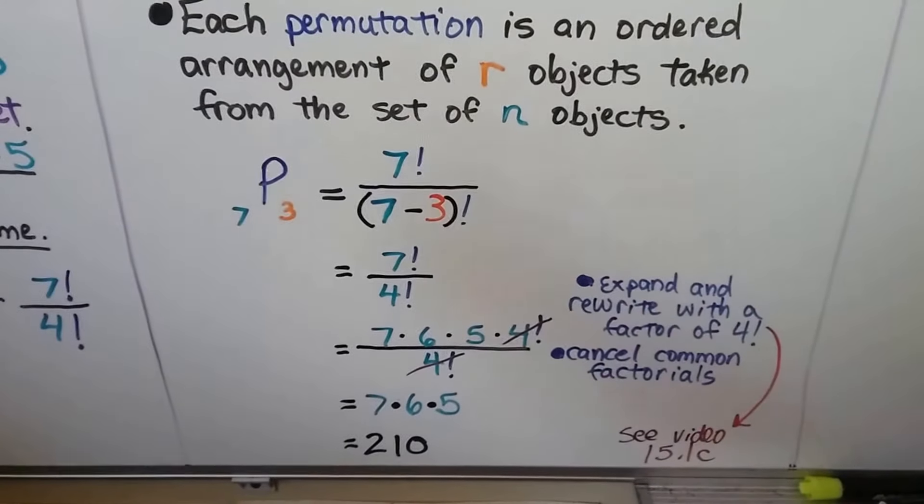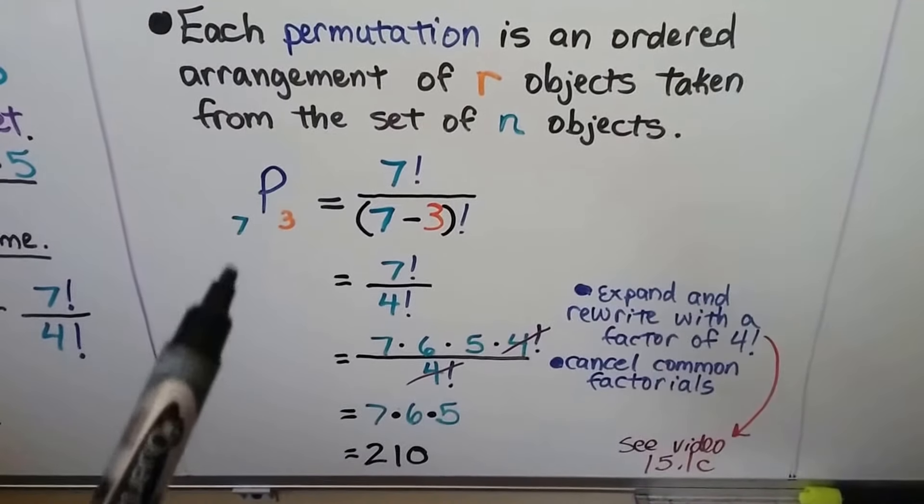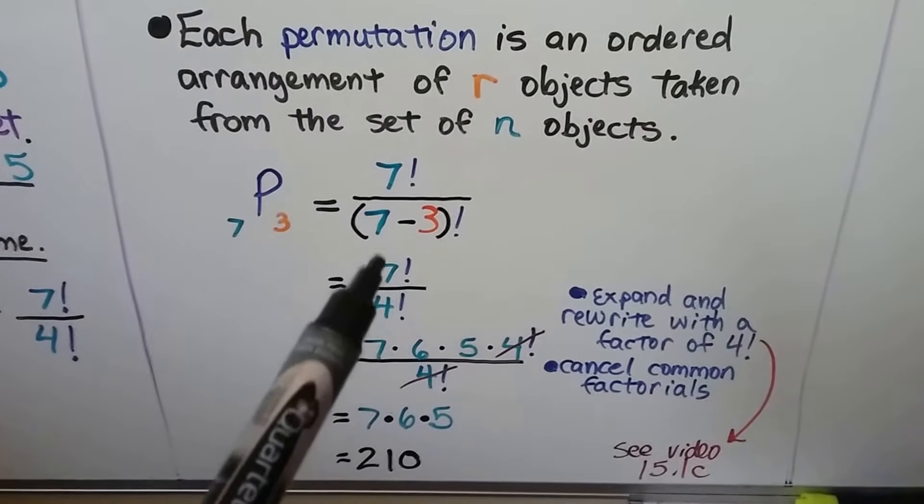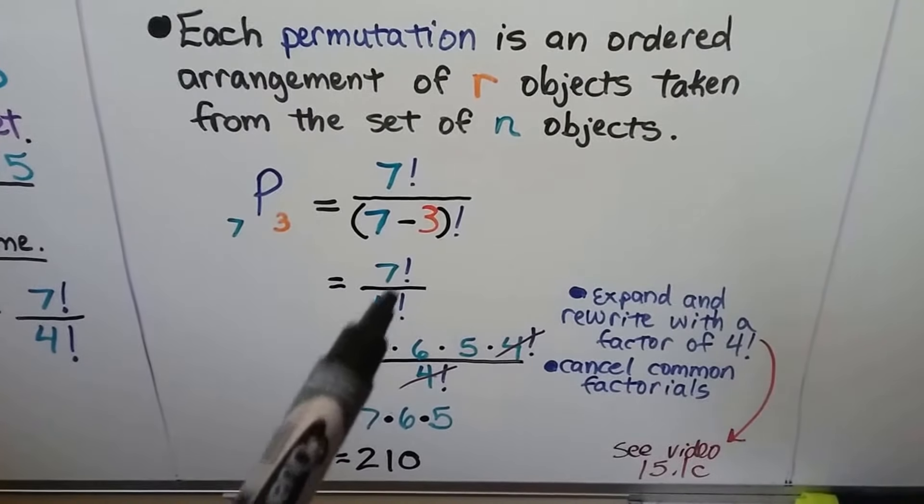So here we have 7P3. We can write this as 7! over (7-3)!. That's 7! over 4!, isn't it?